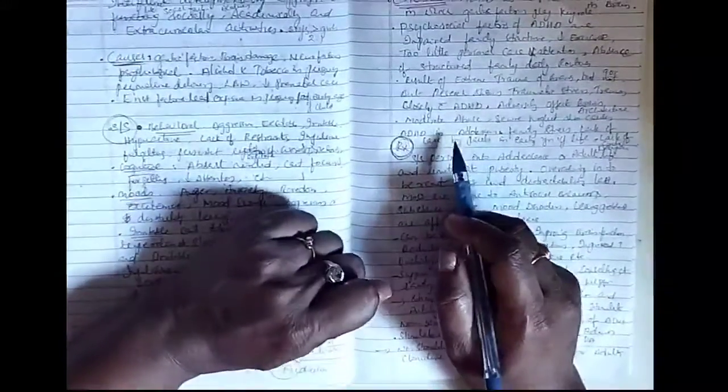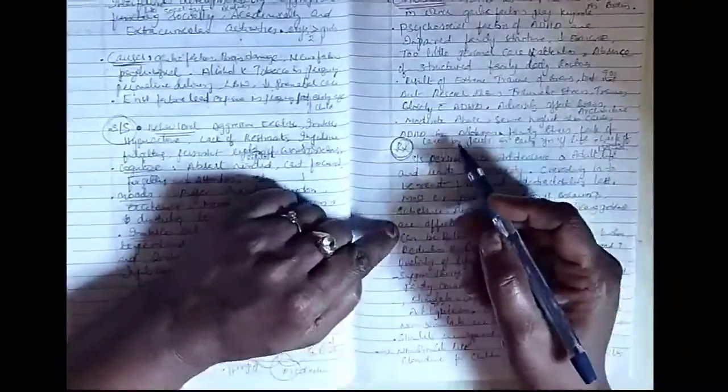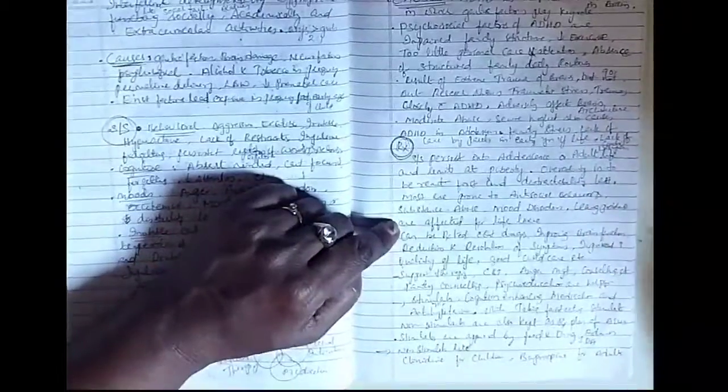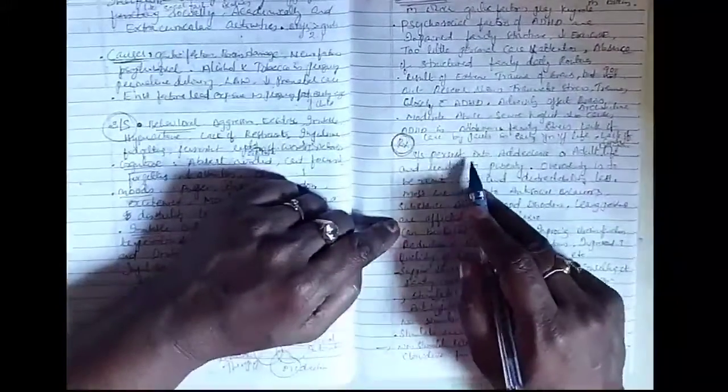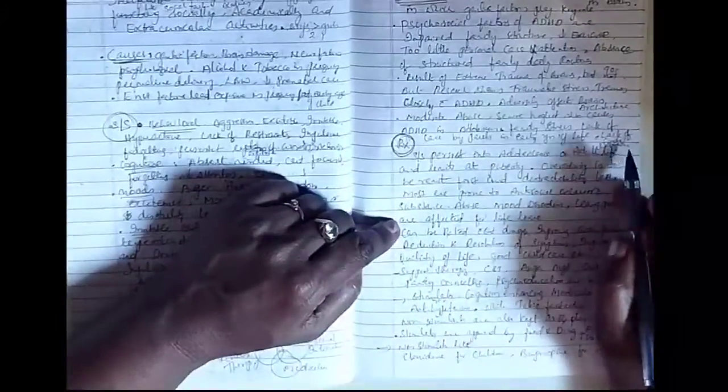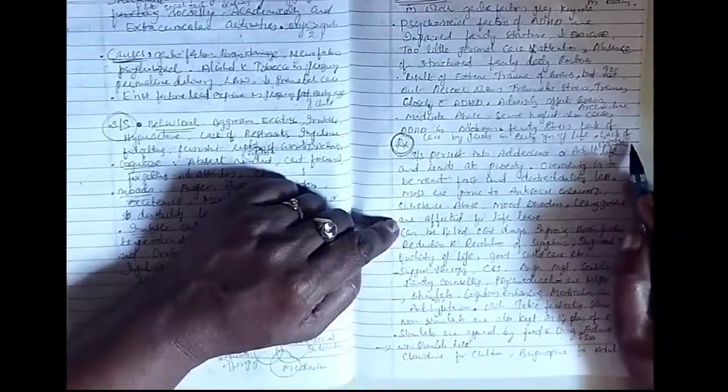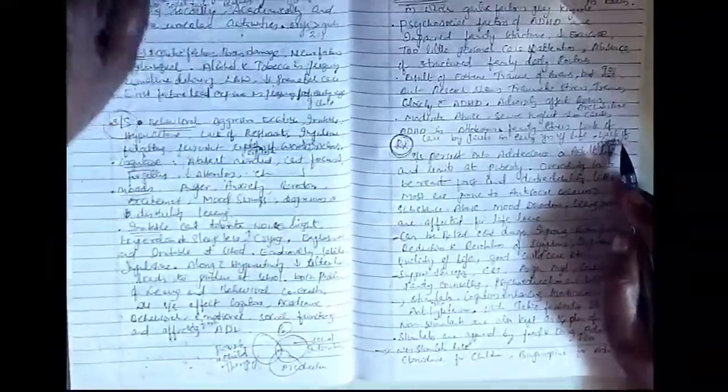Moderate abuse and severe neglect by the parents can also contribute to ADHD in adolescence especially. The family stress and lack of care by the parents in early years of life, lack of discipline or controlling over the child all can contribute to ADHD.